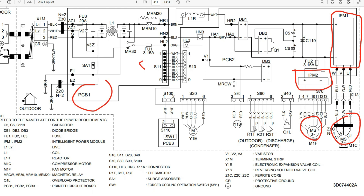Not all power modules are created equal. The one for the compressor takes that very stable DC voltage — probably somewhere in the ballpark of 300 to 325 volts DC — and converts it into a simulated three-phase alternating current power supply. If you guessed the reason we turn it into three-phase is for control and stability, congratulations. That's why we have three wires here — W, V, and U — which are your windings in the motor.